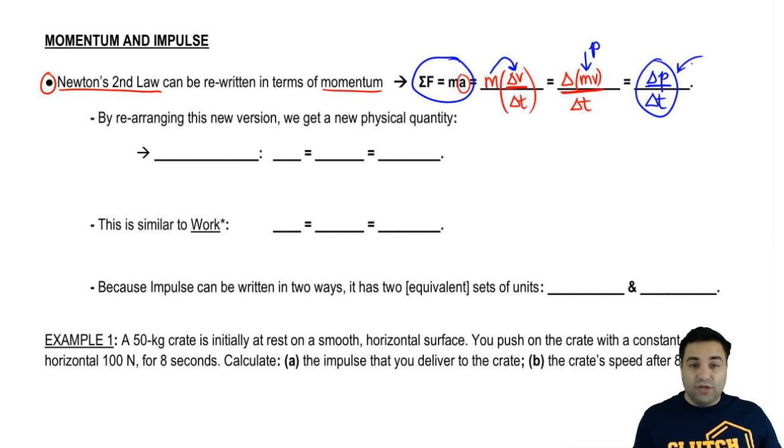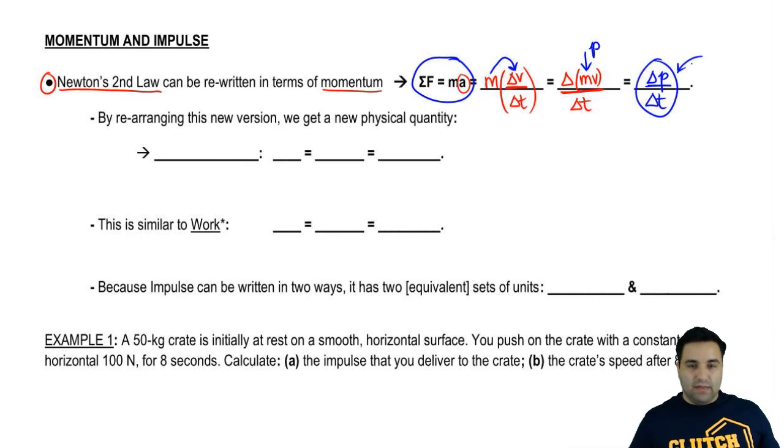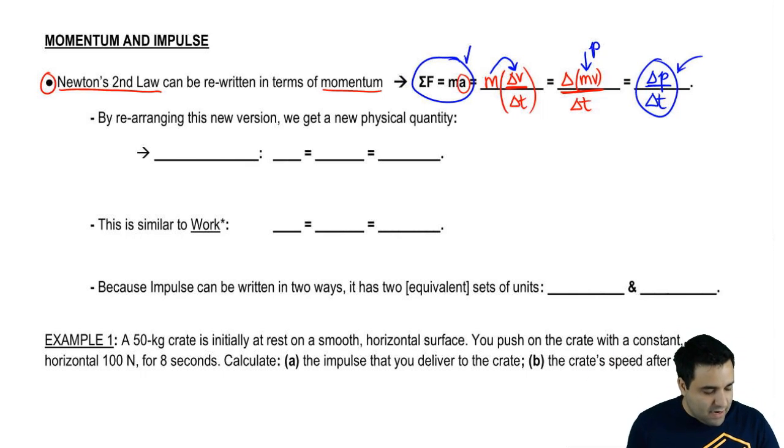And this is actually Newton's original definition. When Newton figured out F = ma, he actually didn't write it as F = ma, he wrote it in terms of changing momentum over change of time. We just learned it this way first because it's simpler, right? I hope you'll agree that this is simpler than this.